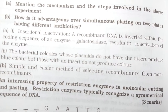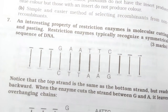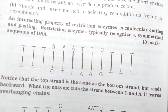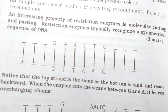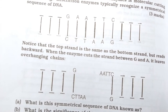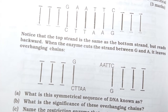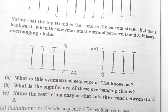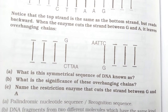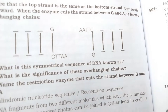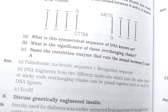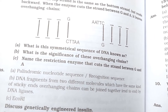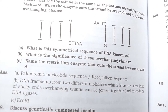Restriction enzymes have an interesting property of molecular cutting and pasting. They typically recognize a symmetrical, palindromic sequence of DNA — the top strand reads the same as the bottom strand but backwards. When the enzyme cuts between G and A, it leaves overhanging chains called sticky ends. A palindromic sequence reads the same from front and back — like the Malayalam example.